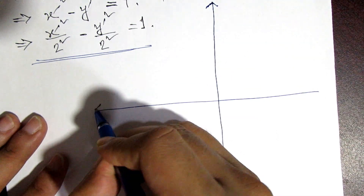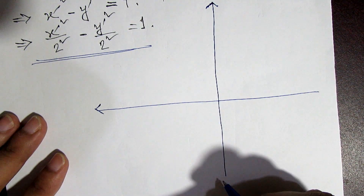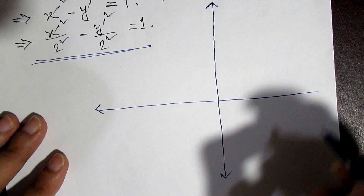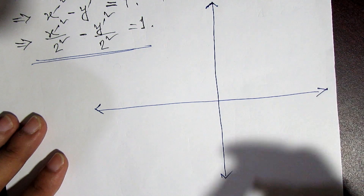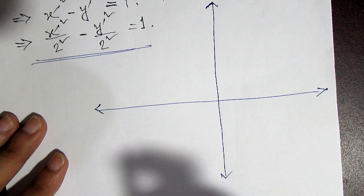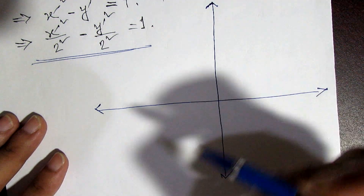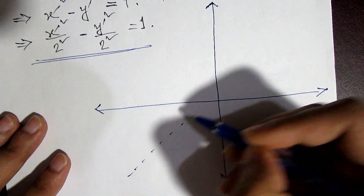We can see that the axes are rotated by π/4. So both the x-axis and y-axis are rotated by π/4.